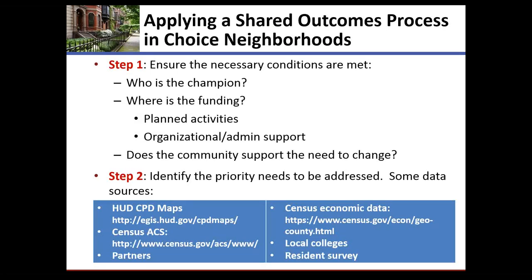We're going to take the basic concepts of a shared outcome process and the steps involved in implementing it, and talk about how that would happen as you move forward on your Choice Neighborhoods or similar neighborhood revitalization activities. The first step involves a set of necessary conditions — precursors that are needed before you can build a collective impact or shared outcomes approach. The first one is having a champion — a person, organization, public entity, or neighborhood group who is championing what you are trying to achieve, who is the voice advocating for this change within this community.